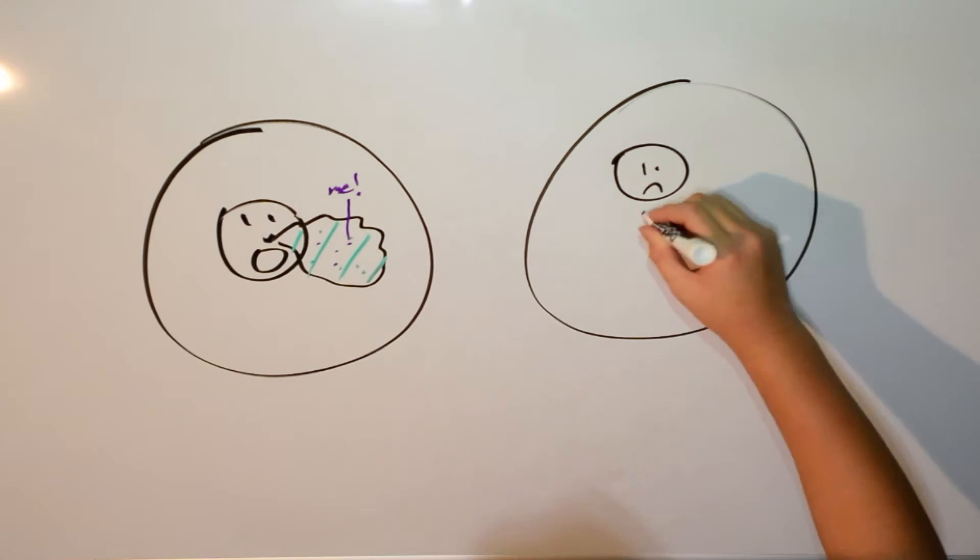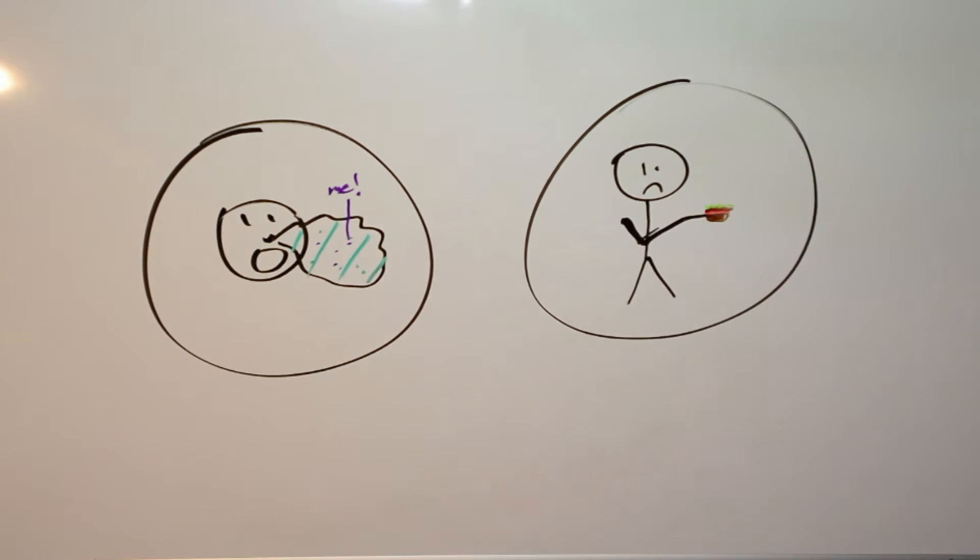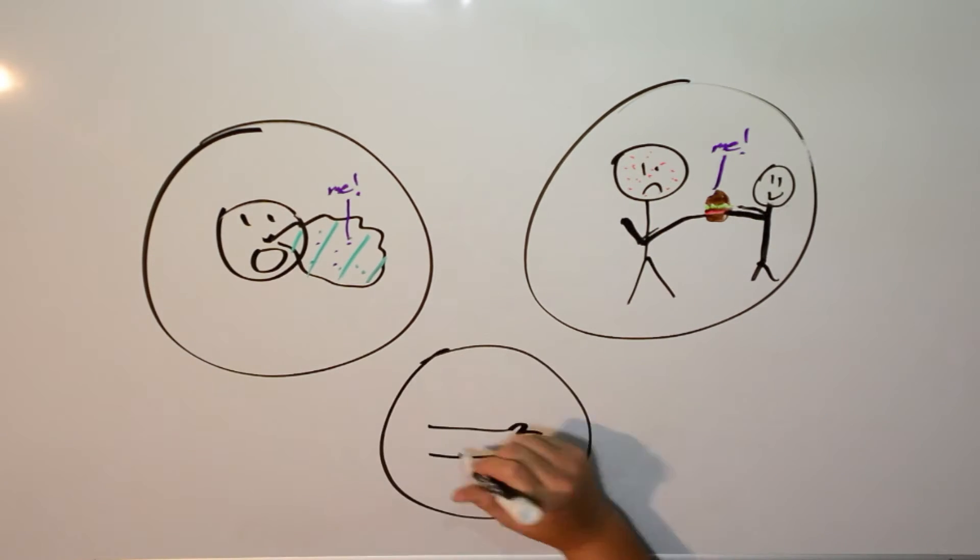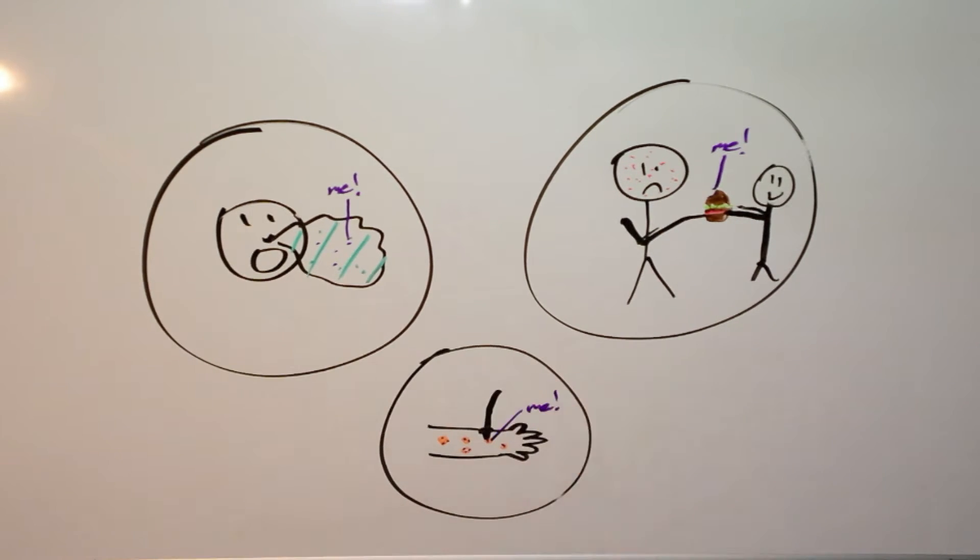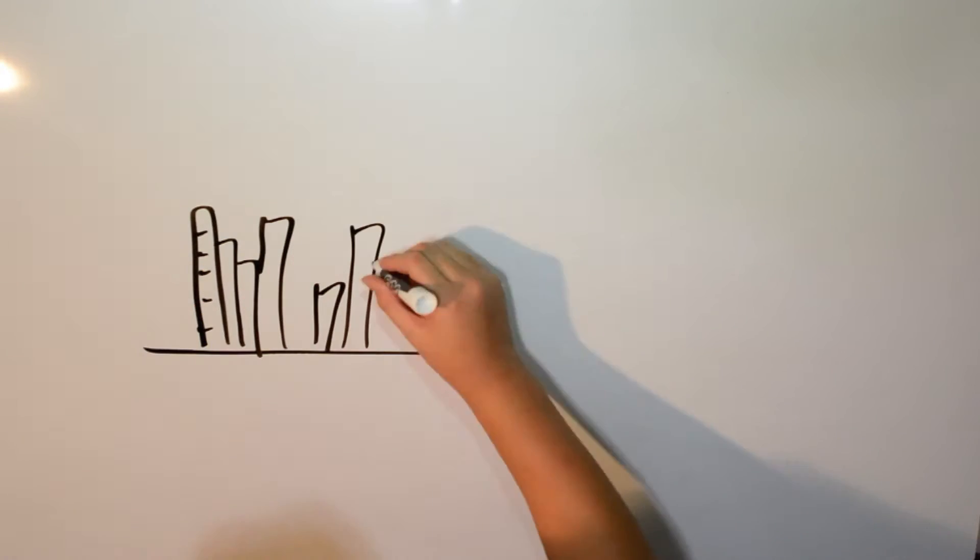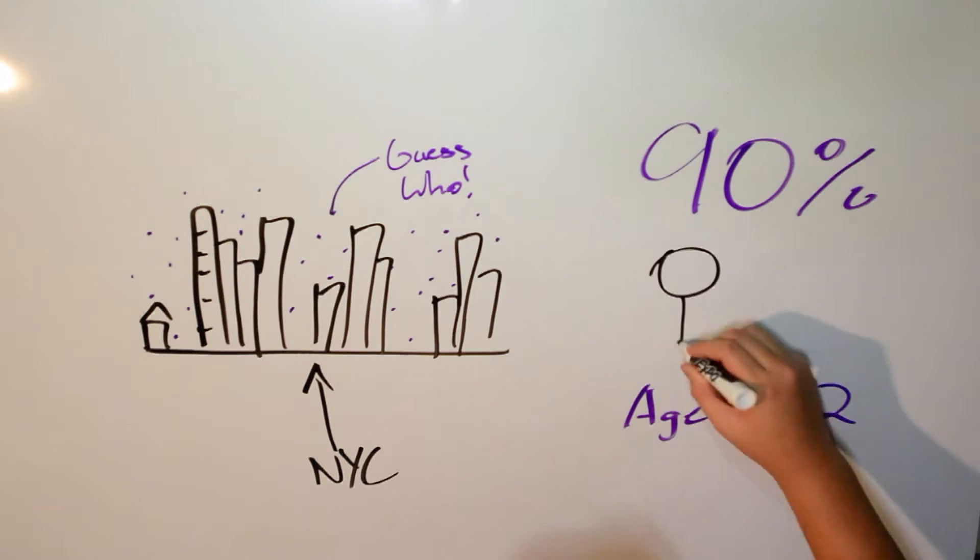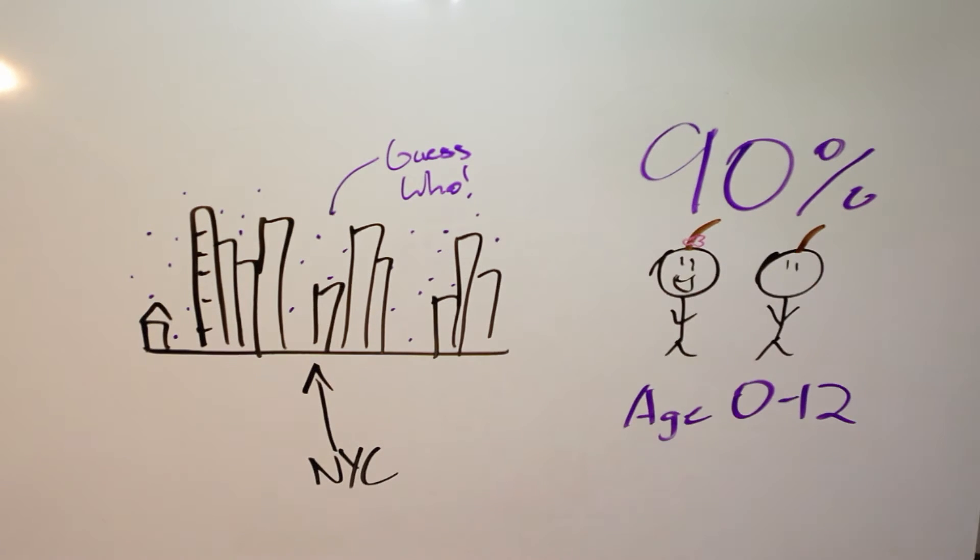When a human sneezes or coughs, and by sharing food and drinks, a human can also get so-called chickenpox if they touch the liquids from blisters. This chickenpox disease is most common in densely populated cities. 90% of all cases have also occurred in both genders of children up to 12 years old.